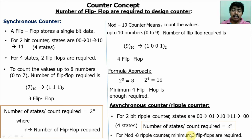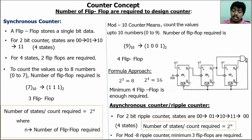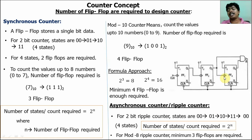For an 8-state ripple counter, the maximum number is 7. The binary value for 7 is 111, so three flip-flops are required — minimum three flip-flops. This is an example of an asynchronous or ripple counter using T flip-flops: the clock is applied to the first flip-flop, and the output of T1 goes to the clock input of the second flip-flop. So the clock is applied at different times, not simultaneously.